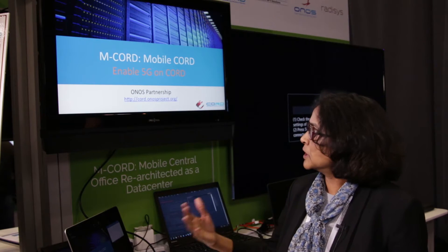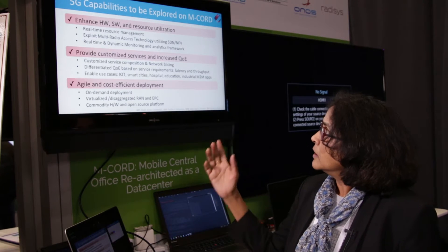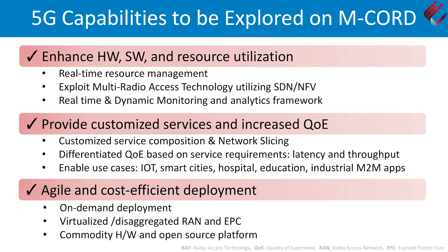MCORD is about trying to bring 5G on the CORD platform. 5G means ubiquitous network access, high capacities, new business models, new network services, and ability to use heterogeneous cellular networks. In the MCORD project, we are focusing on three fundamentals of 5G. To start with, we are enhancing hardware, software, and resource utilization in terms of spectrum resource utilization.